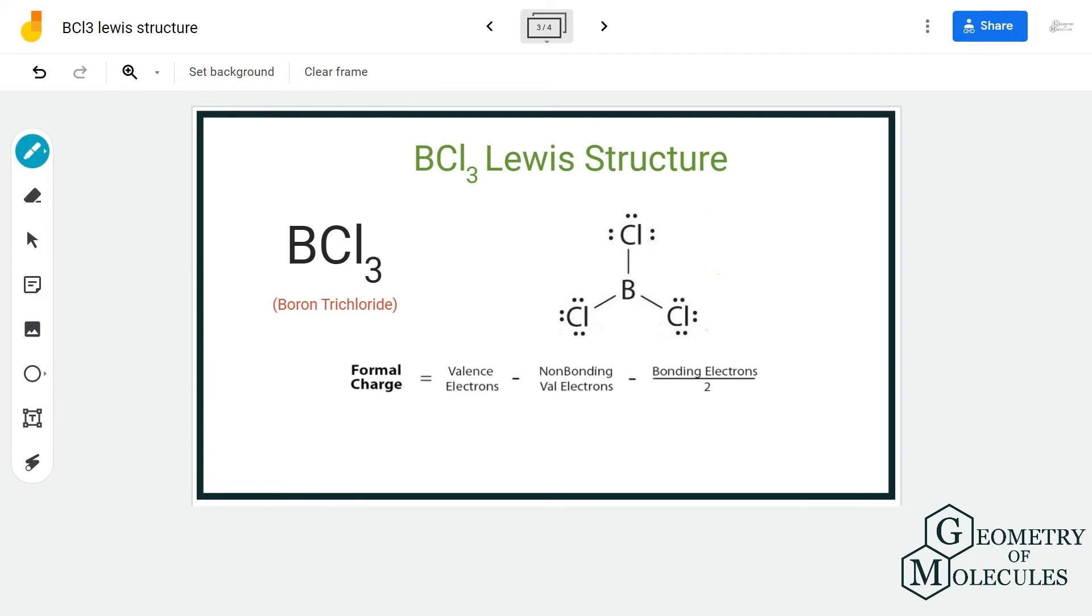In Lewis structure, we try to come up with a structure which has the charges as close to zero as possible. In this structure, the formal charges for all the atoms involved will be zero. Hence, this is the Lewis structure of the BCl3 molecule.